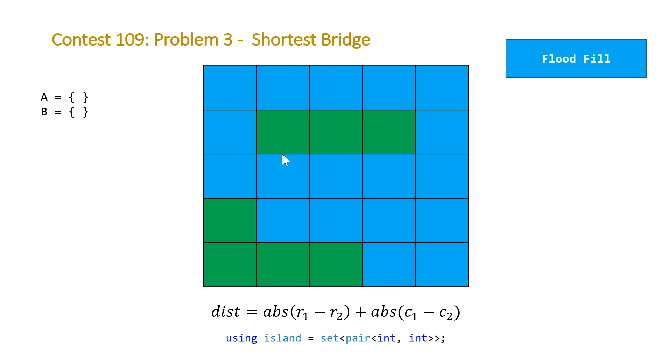We'll finish our first flood fill, then we'll continue looping through and checking that if our element in our grid has a value of one but it's not in the first island that we found, then we know we found our second island. Then we can perform a second flood fill to fill the values in B.